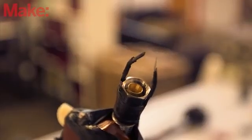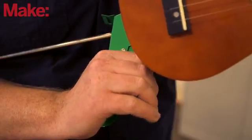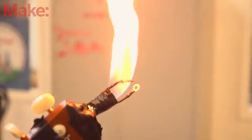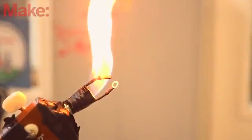Trigger the igniter and verify that you see a spark. Give the handle of the caulking gun a squeeze while triggering the igniter and the flame should emit from the nozzle. You may need to manually blow out the flame in between ignitions.